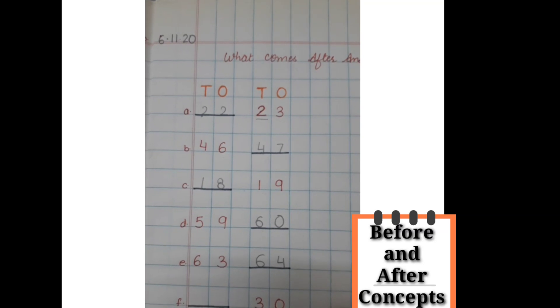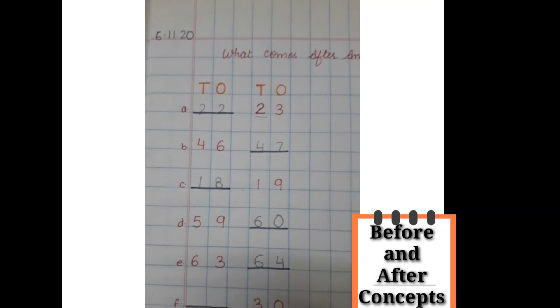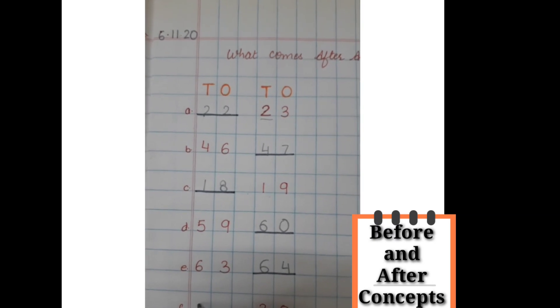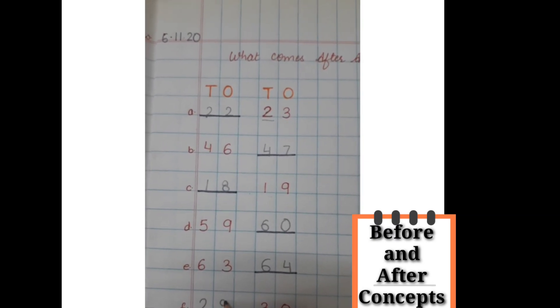Now we have to do the backward counting. We have to do what comes before 30. So what comes before 30? 29.